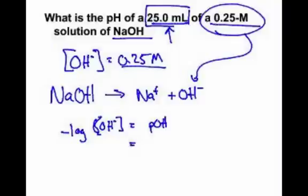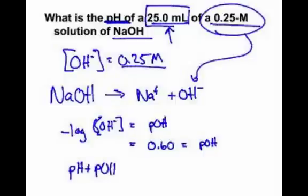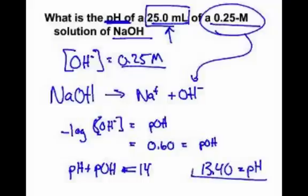If you take the negative log of the hydroxide concentration, that equals the pOH. That gives us 0.60 — the pOH equals 0.60. pH and pOH always add up to 14 at 25°C. So you take 14 minus 0.60 = 13.40. That equals the pH, and that is a basic solution — greater than 7. The answer makes sense.